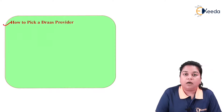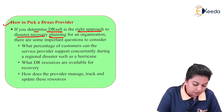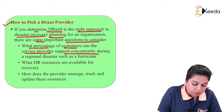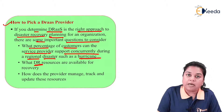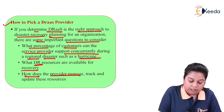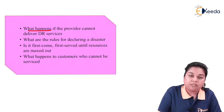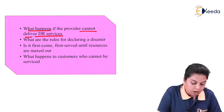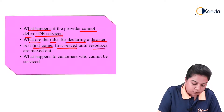When picking a disaster recovery as a service provider, there are important questions to consider: What percentage of customers can the provider support concurrently during a regional disaster such as a hurricane? What disaster recovery resources are available? How does the provider manage, track, and update these resources? What happens if the provider cannot deliver services? What are the rules for declaring a disaster — is it first-come, first-served until resources are maxed out? What happens to customers who cannot be serviced?